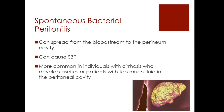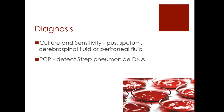To diagnose a Streptococcus pneumoniae infection, we can perform culture and sensitivity tests. We can take a sample of pus or sputum for community-acquired pneumonia, cerebrospinal fluid for meningitis symptoms, or peritoneal fluid for spontaneous bacterial peritonitis, and use that for culture and sensitivity testing. We can also use PCR to detect Streptococcus pneumoniae DNA.